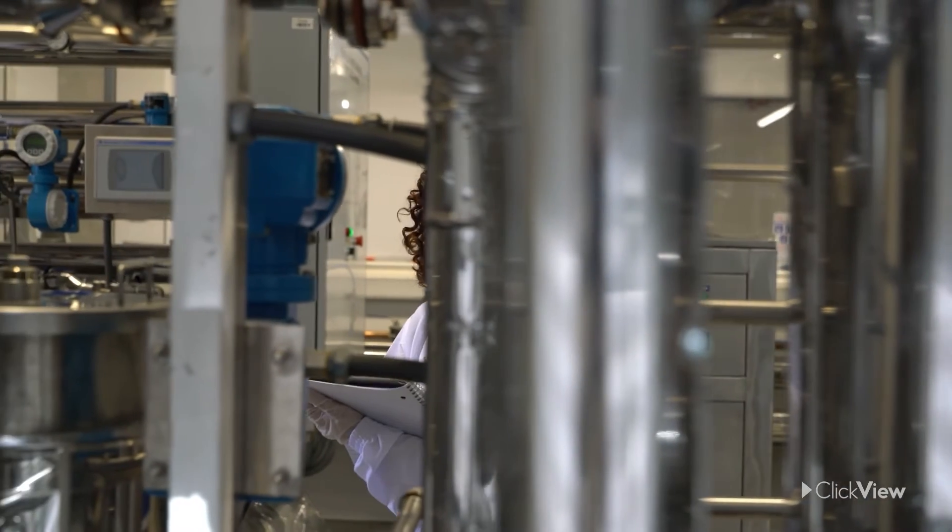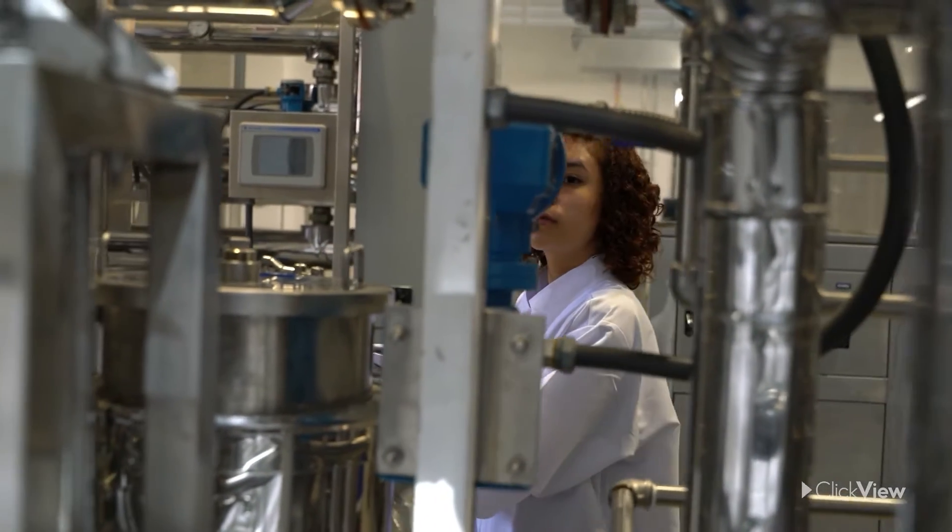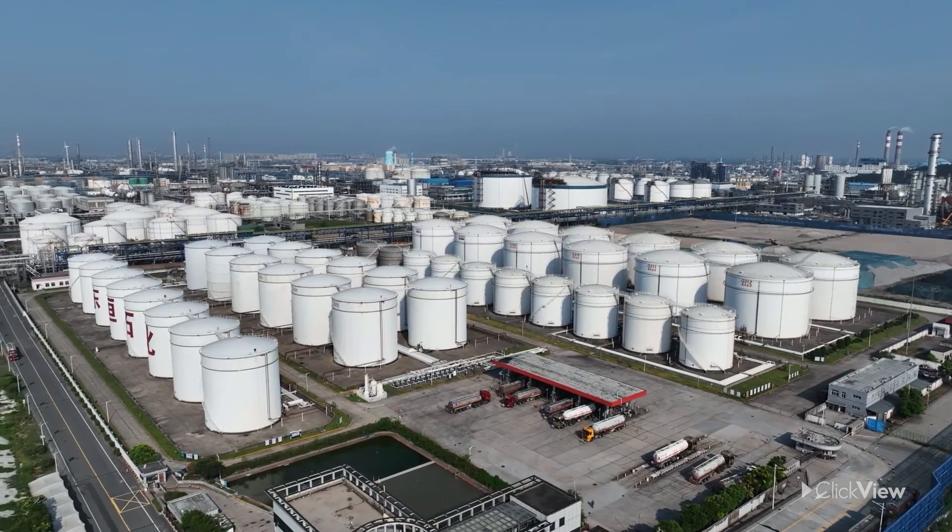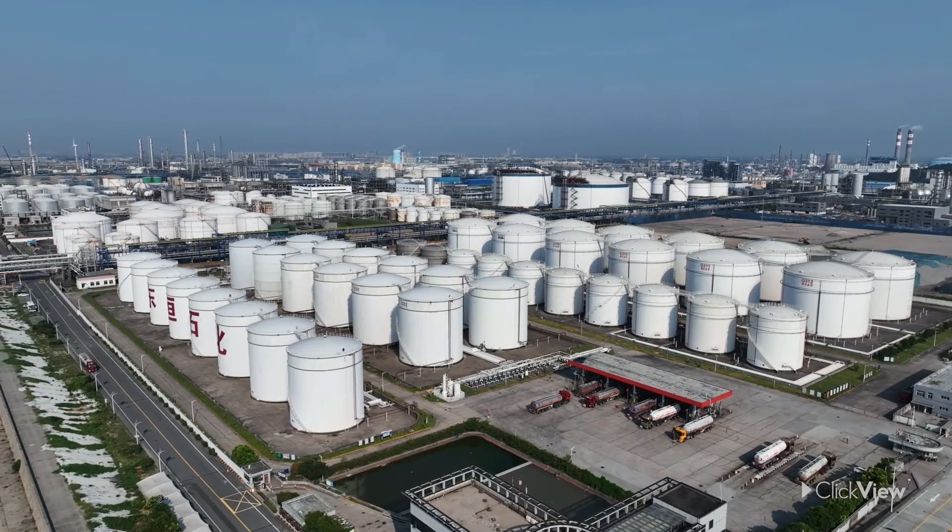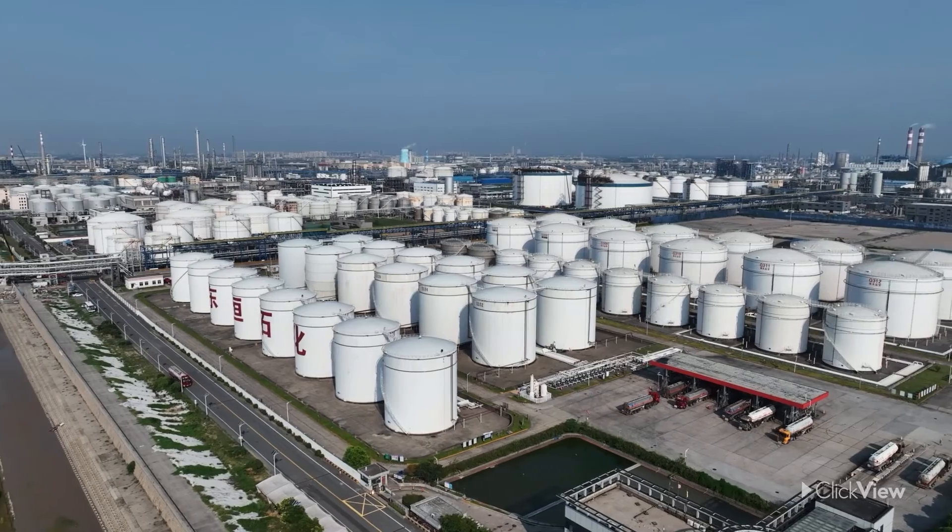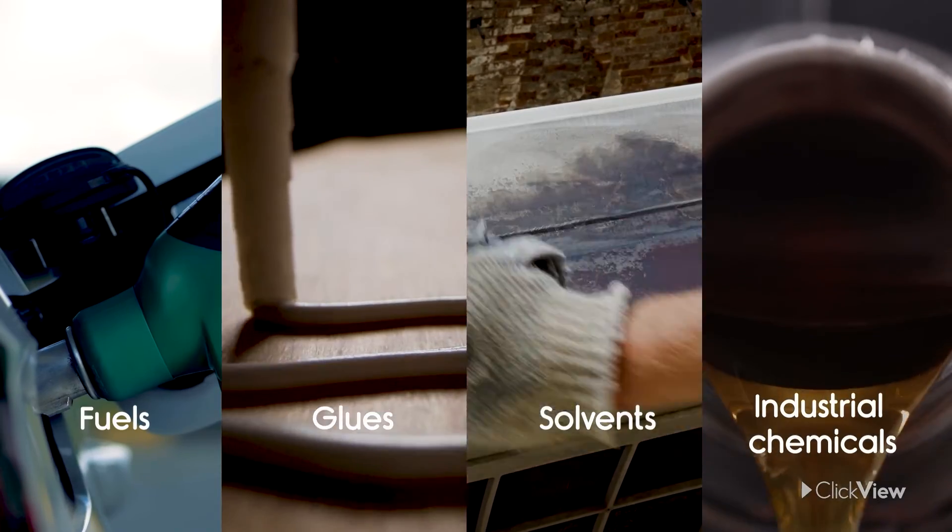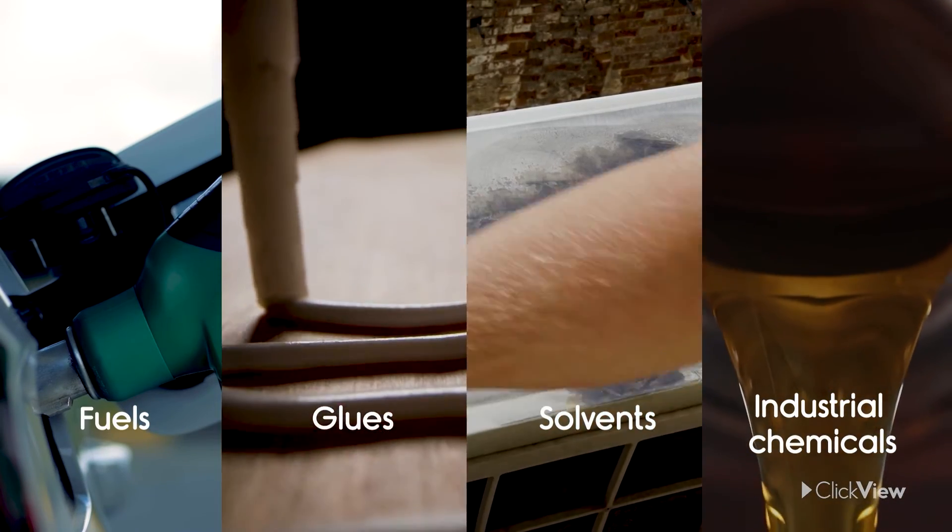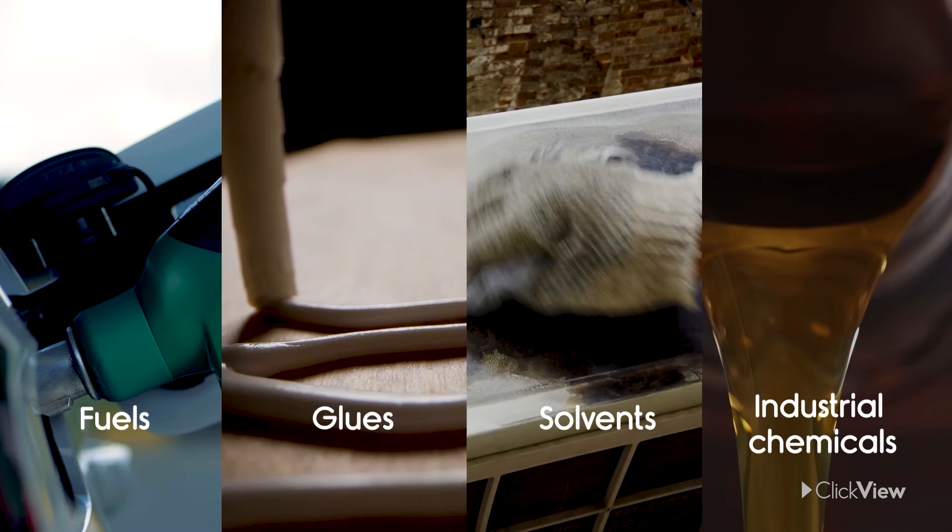Distillation is used in a number of other ways in industry. For example, refineries distill crude oil, which is taken from the earth and made into a wide range of different products, like fuels, glues, solvents, and industrial chemicals, which all have different boiling points.